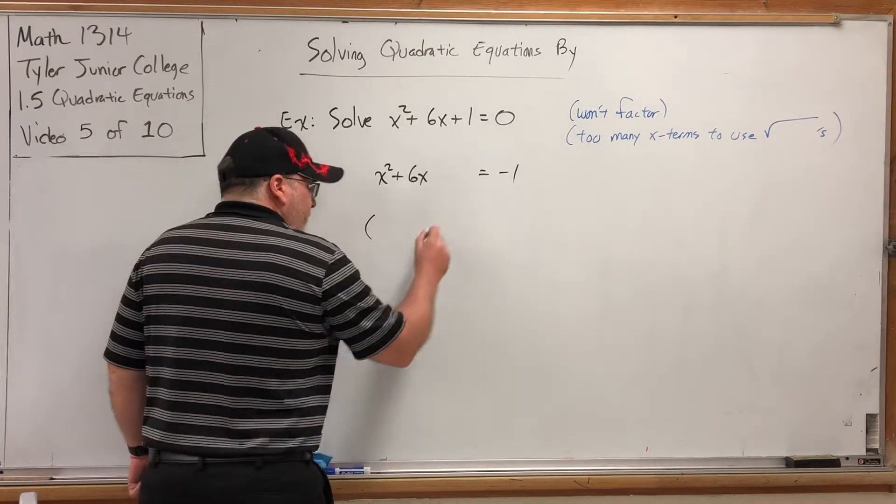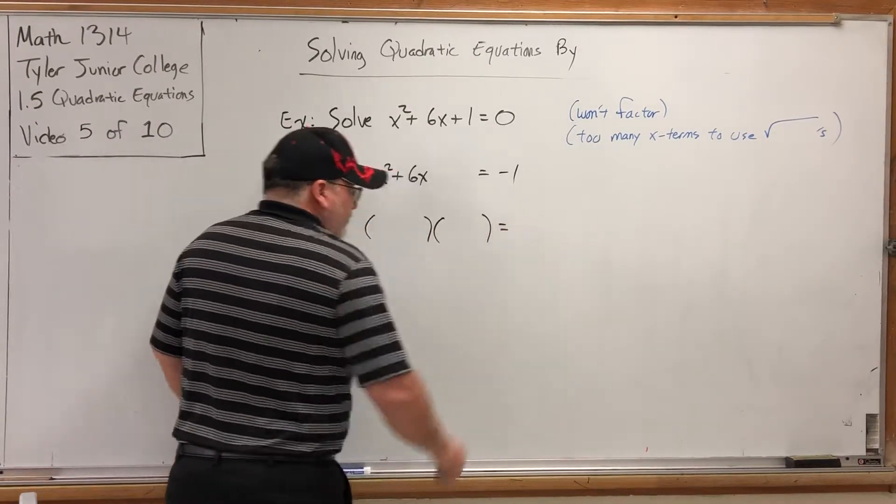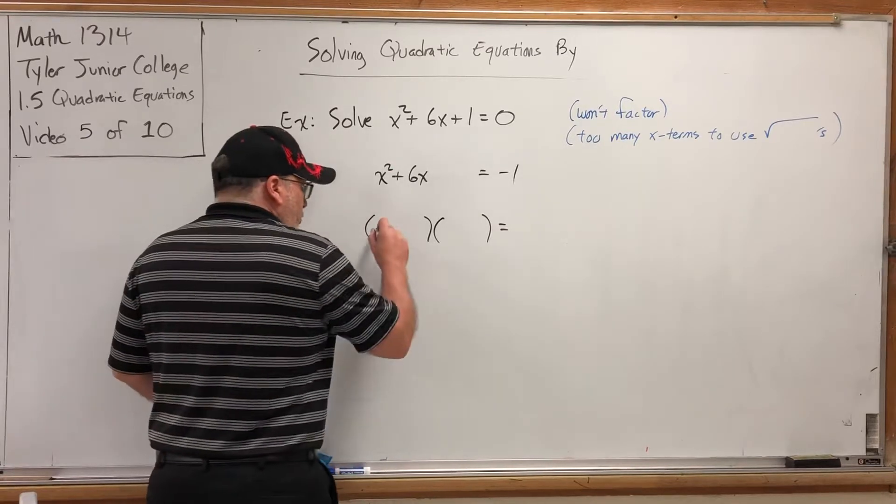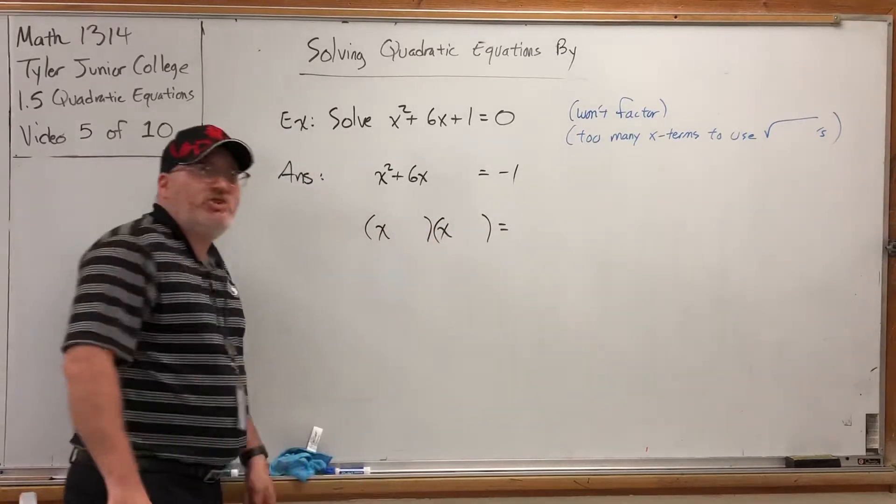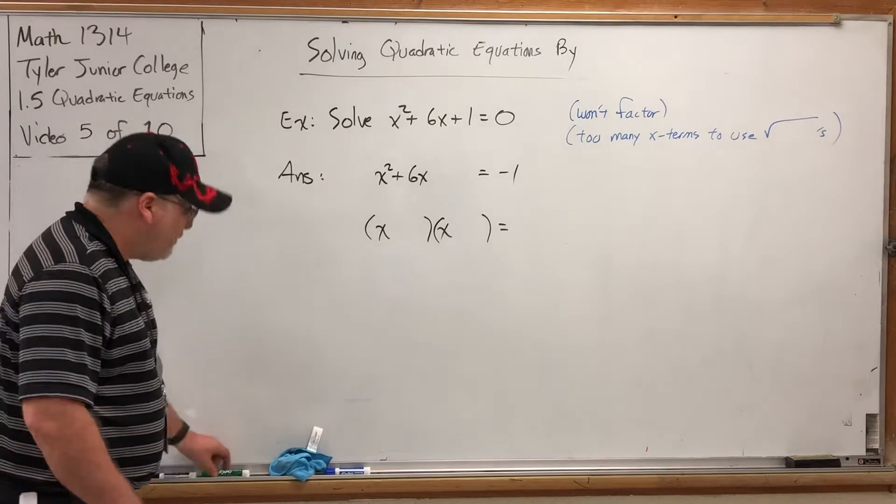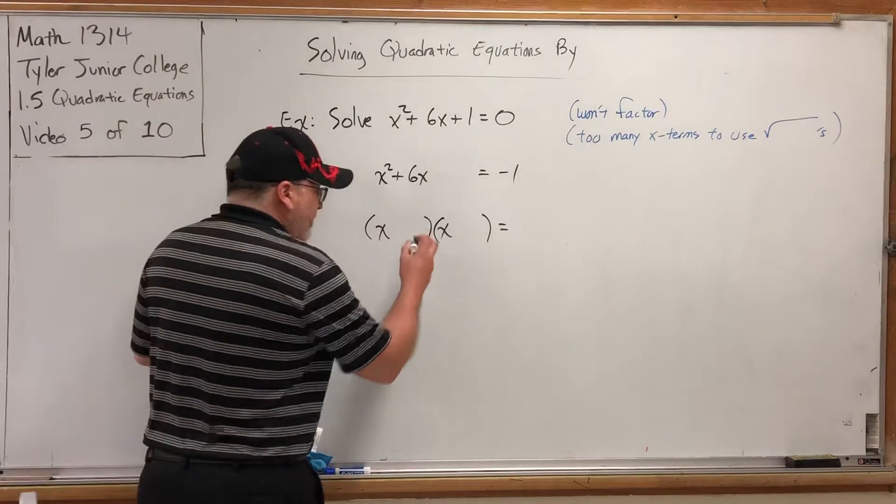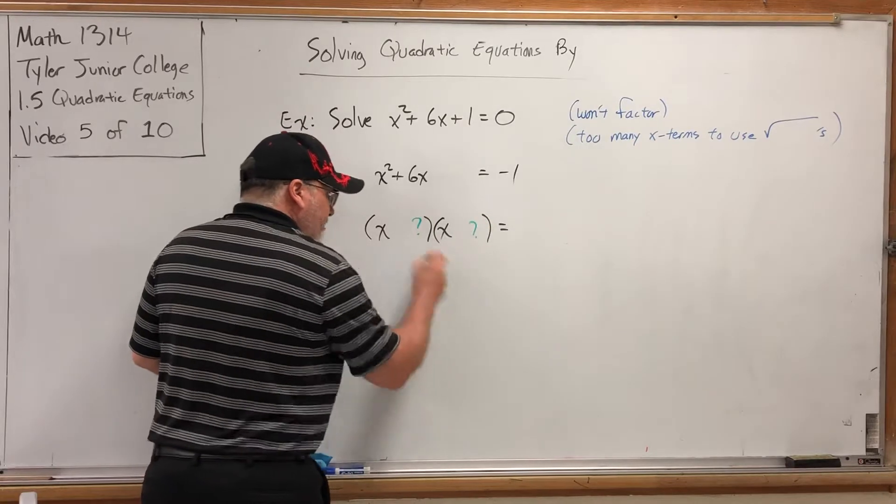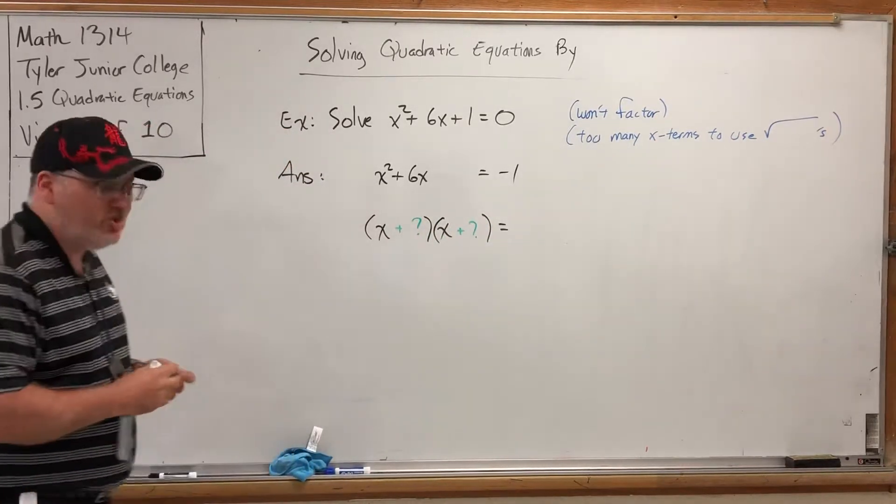I know what I want to happen. Now, I want this to factor into the same thing twice. Now, I know what that same thing has to be. Just think about what number would have to be here and here. Let's go ahead and put pluses there, keeping in mind that it could be minuses.